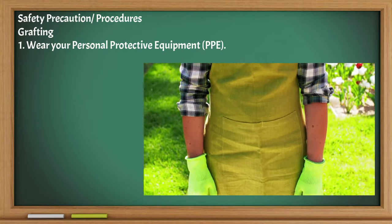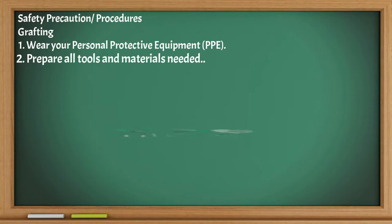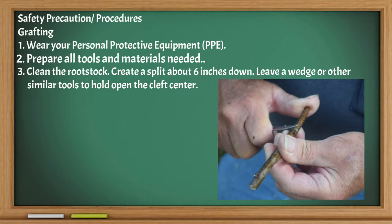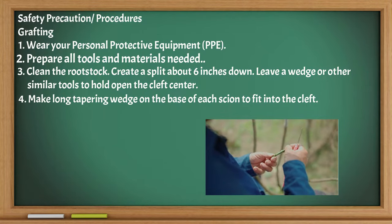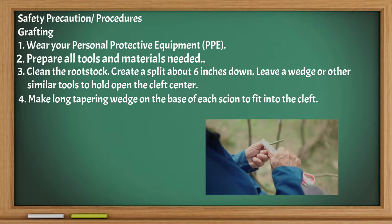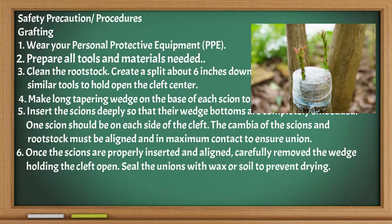Wear your personal protective equipment or PPE. Prepare all tools and materials needed. Clean the rootstock. Create a split about 6 inches down, and leave a wedge or similar tool to hold open the cleft center. Make long tapering wedges on the base of each scion to fit into the cleft. Insert the scions deeply so that their wedge bottoms are completely embedded.